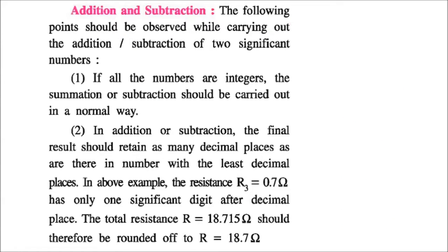In addition and subtraction, the final result should retain as many decimal places as there are in the number with the least decimal places. For example, R3 = 0.7 has only one significant digit after the decimal place, so the sum 18.715 is rounded to one decimal place. The 15 is ignored and the result is rounded off to 18.7.